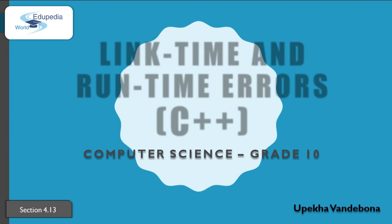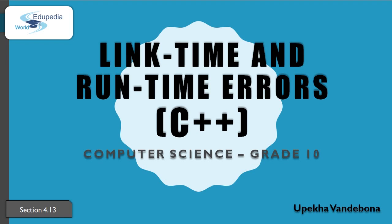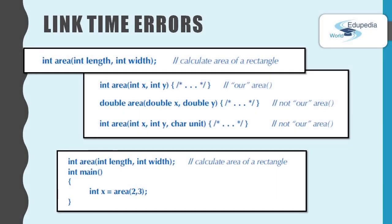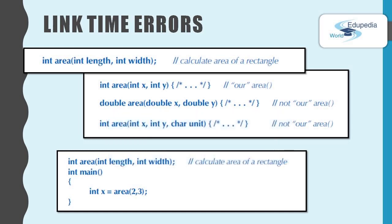I'm Upeka Vendibona and in this episode we are going to discuss about link time and runtime errors in C++. A program consists of several separately compiled parts called translation units. Every function in a program must be declared with exactly the same type in every translation unit in which it is used, and every function must also be defined exactly once in a program. If either of these rules is violated, the linker will give an error. I'll explain this by writing code in NetBeans IDE.